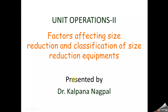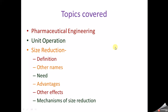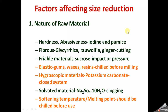Moving forward, let's begin the topic. Today we shall discuss the factors which affect size reduction. The first factor is the nature of raw material — how the nature of the material we are going to reduce in size affects the unit operation. The very first sub-factor is hardness and abrasiveness; for example, iodine and pumice, whose hardness and abrasiveness will affect the process of size reduction.